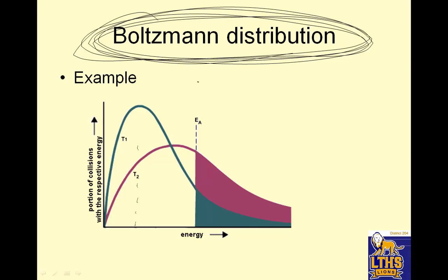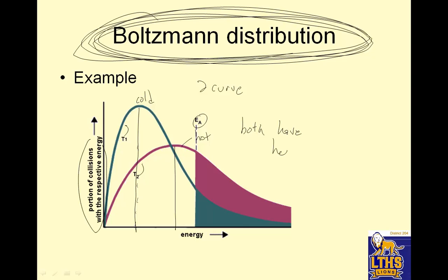The Boltzmann distribution tends to have two curves. This is temperature one, this is temperature two. This is the cold one. You can tell the temperature by dropping a line down from the peak. The peak of this one is here — this is the cold one, this is the hot one. EA we'll talk about later. Both curves have hot particles and both have cold particles.